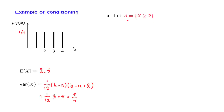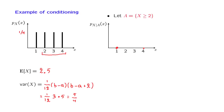Suppose now somebody tells us that event A has occurred, where event A is that the random variable x takes values in the range {2, 3, 4}. What is the conditional PMF? In the conditional model, we are told the value 1 did not occur, so its probability is 0. The other three values are still possible. Since these three values had equal probabilities in the original model, they should have equal probabilities in the conditional model as well, and for the probabilities to sum to 1, each must be 1/3. So this is the conditional PMF given the new information.